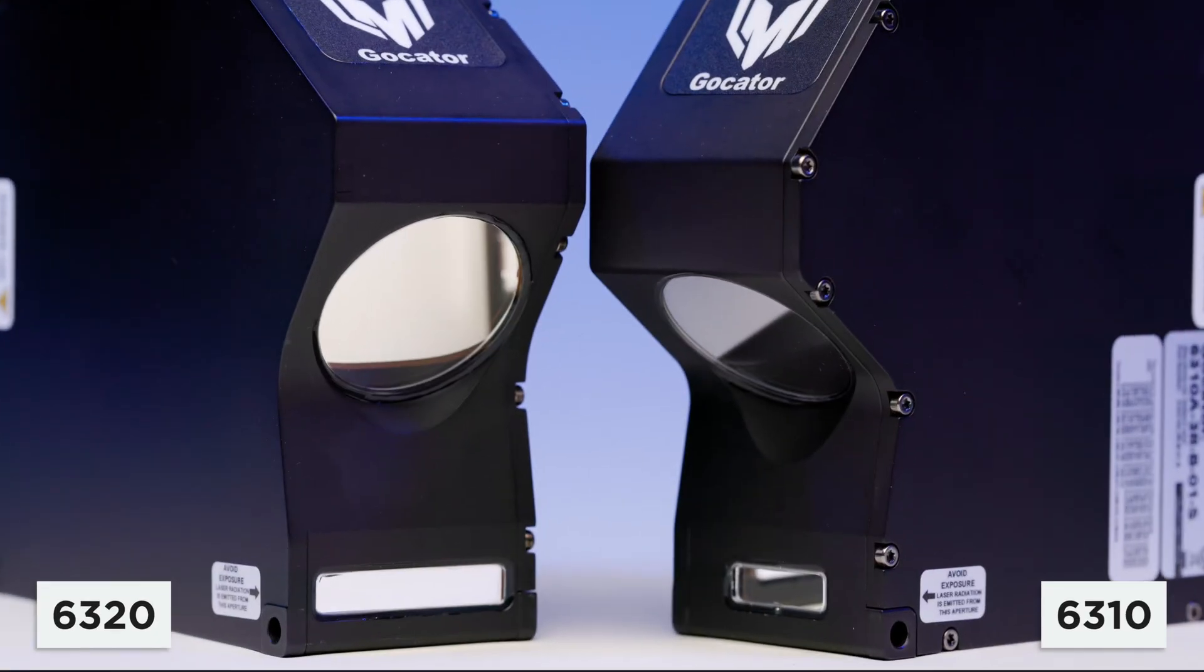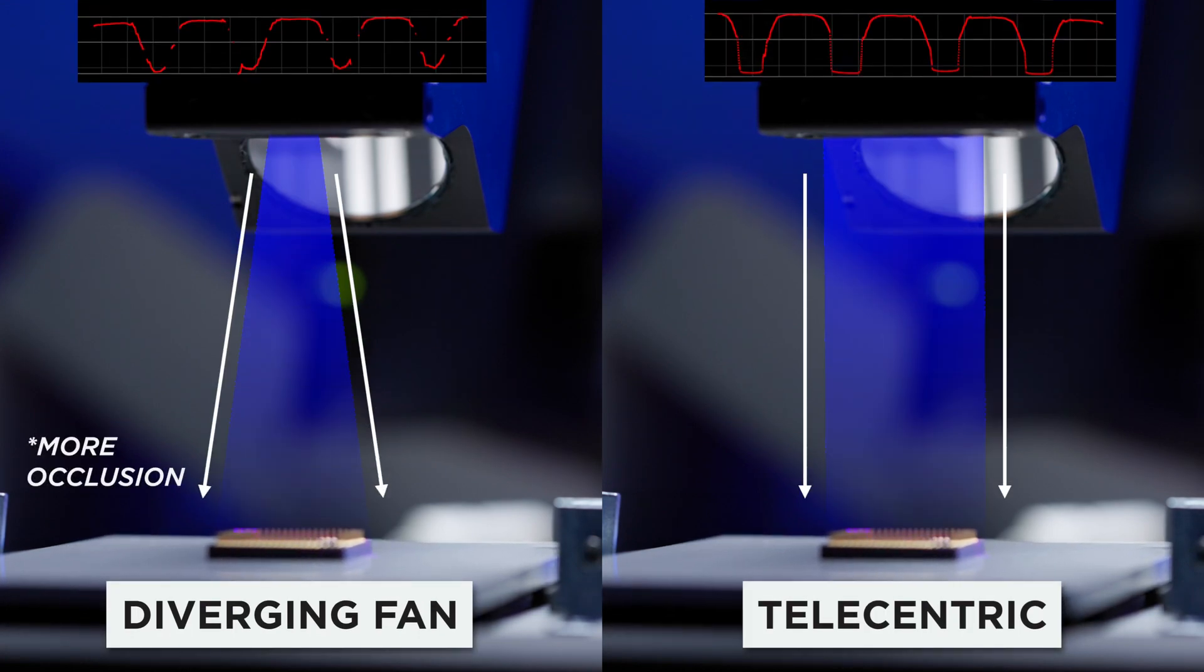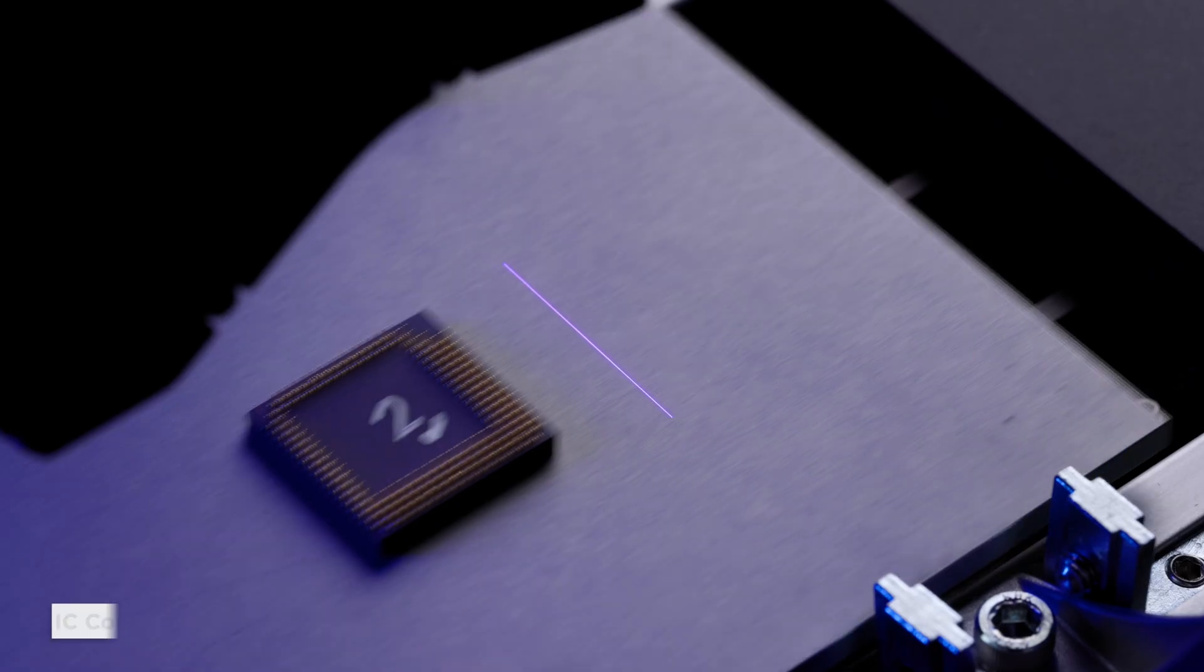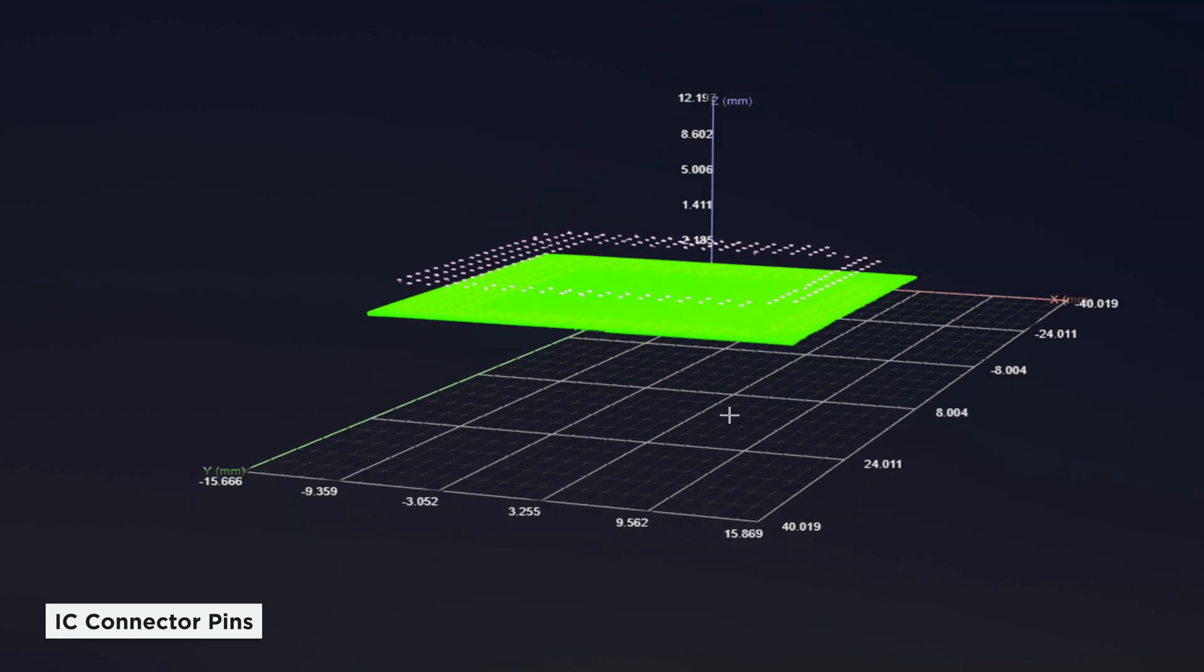The 6310 and 6320 utilize advanced telecentric line generation, maximizing laser power density across the measurement range, improving edge and feature detection.